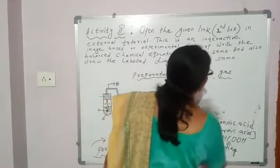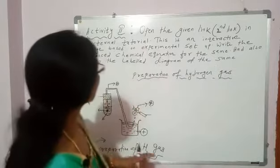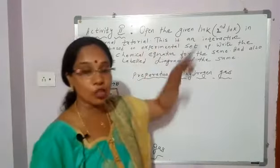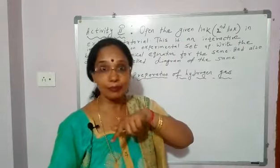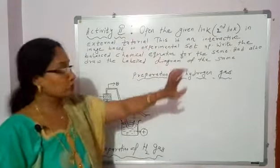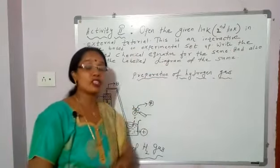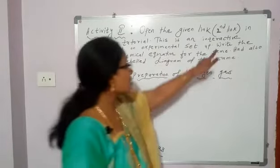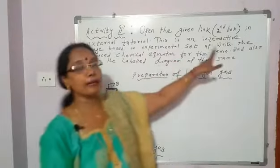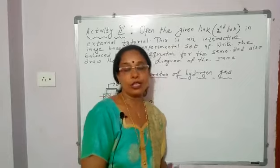Now students, Activity 2. This is also given in your portal — this link in the external tutorial, the second link. You open it. So open the given link, second link in external tutorial. This is an interactive image based on experimental setup. What you have to do: watch the complete video and write the balanced chemical equation for the reaction, and also draw a labeled diagram of the experimental setup. When you open the link, you will come to know. This is the diagram shown there in the link when you open — it is not labelled; arrow marks and plus signs are given, and you have to find out the labelling.